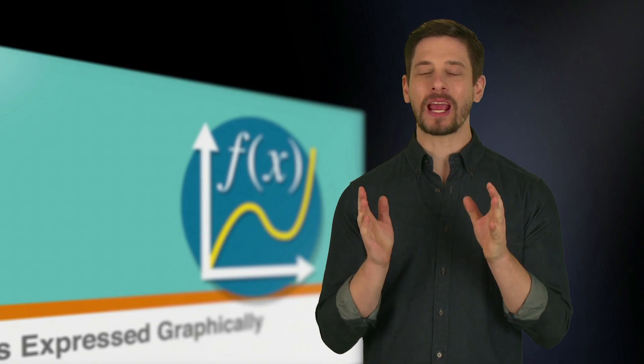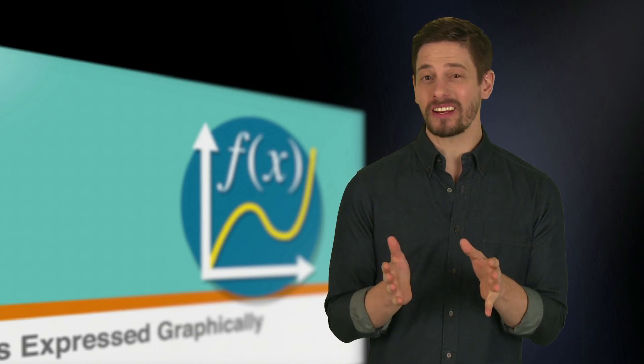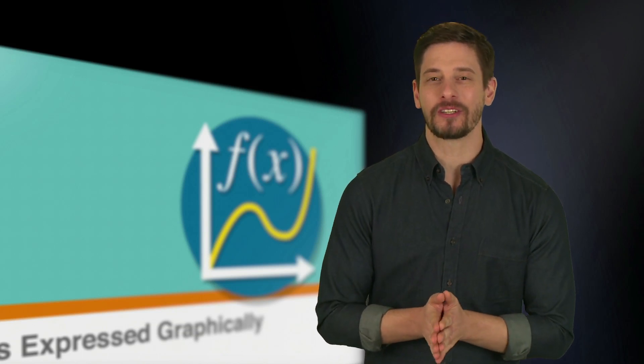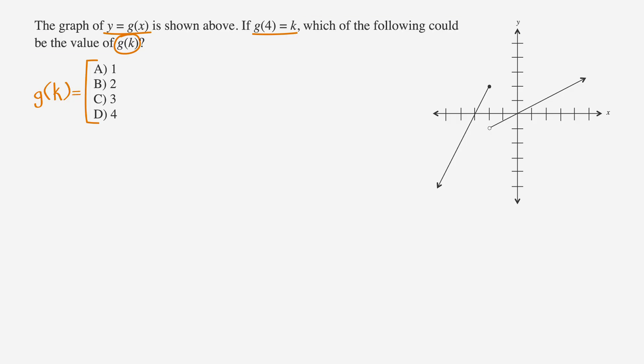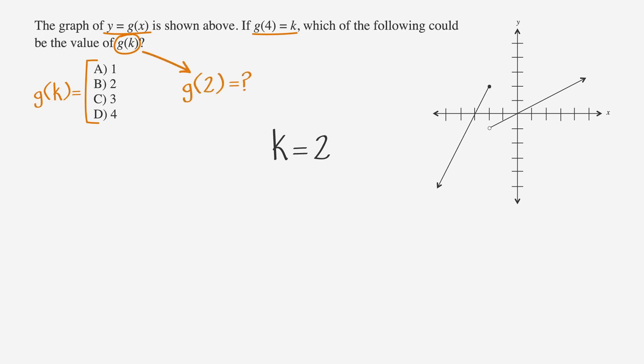We've pulled out a lot of information, but we aren't done yet. Let's reread the question — it asks which of the following could be the value of g(k), not just what is k. So if k equals 2, the question is really asking: which of the following could be the value of g(2)? Looking at the graph, the y value when x equals 2 is 1. So g(k) = 1, which means answer choice A is correct.